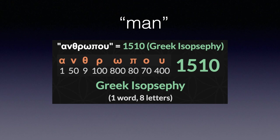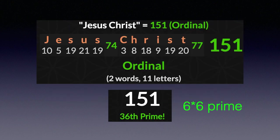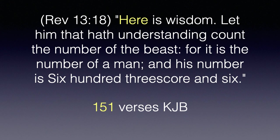The word for 'man' in Revelation 13:18 in Greek is 'anthropos,' with a value of 1,510, or 151 times 10. The phrase 'Jesus Christ' using ordinal English has a value of 151. And 151 is the 36th prime number, while 666 is the 36th triangular number — with 36 being the 8th triangular number and 6 times 6. The first word, 'here,' in Revelation 13:18 occurs in exactly 151 verses of the King James Bible — the value of the phrase 'Jesus Christ' in ordinal English.